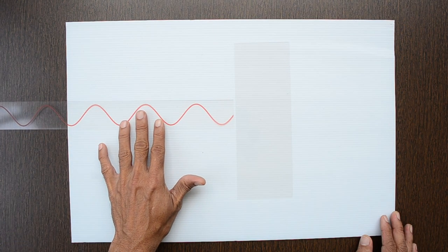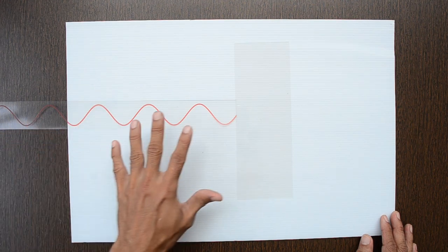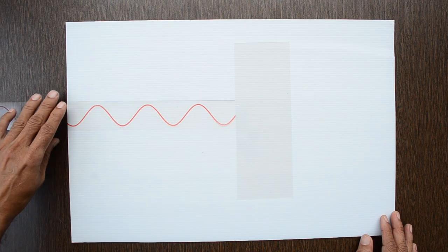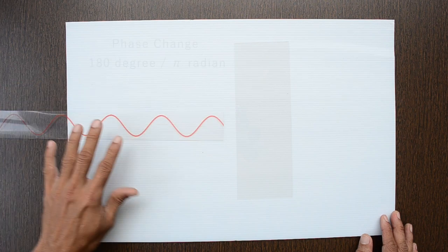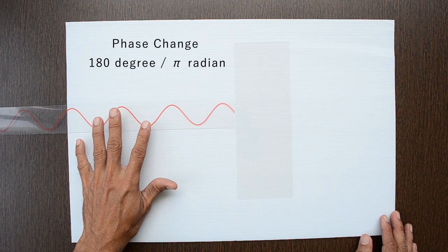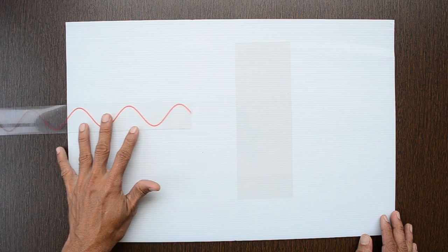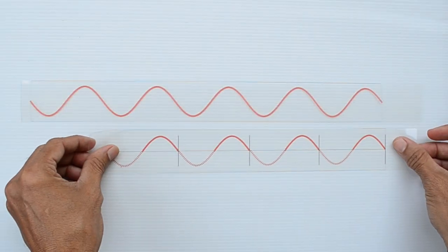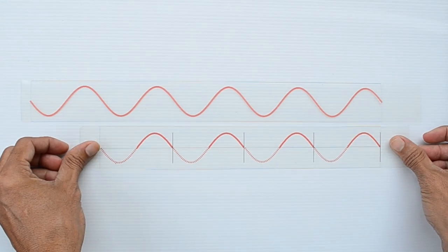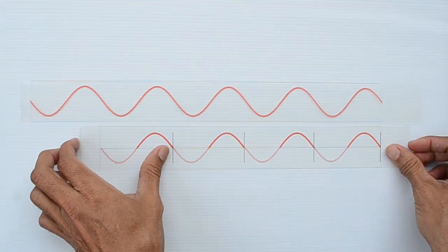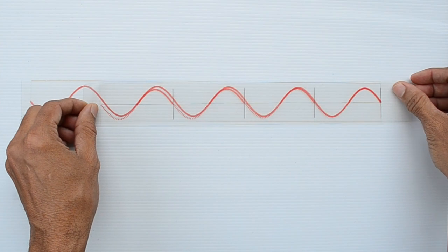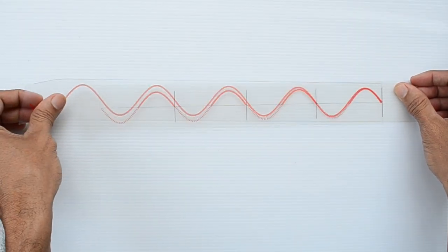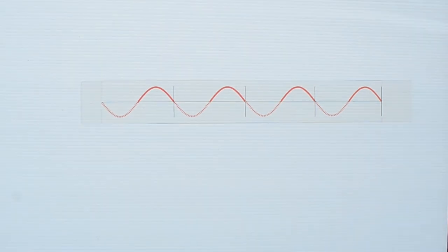When a wave gets reflected from this boundary, it doesn't travel back as is. It travels back with a phase change of 180 degrees or pi radians. Instead of one continuous solid line, let us make it dotted in the region where amplitude is negative. Wavelength is demarcated by vertical lines. This will help in better visualization.